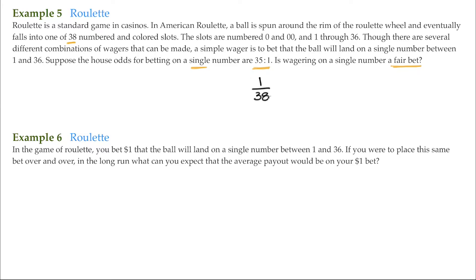Now we know that odds are A to B, written like this. So since the house odds are 35 to 1, then to write these odds as a probability, that's B over A plus B.